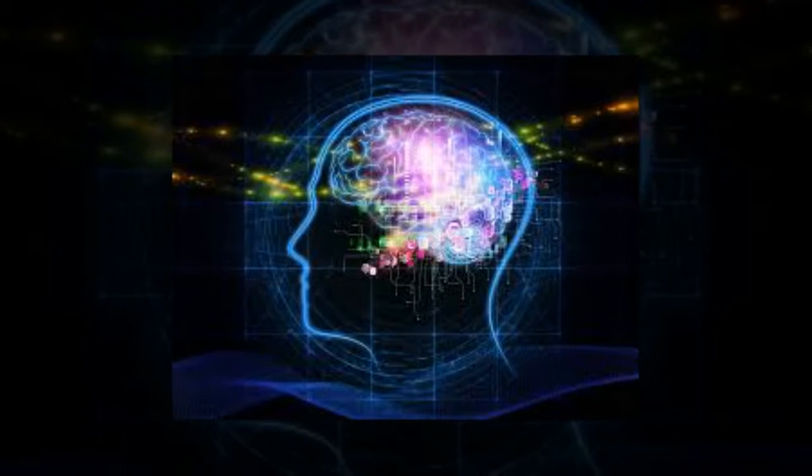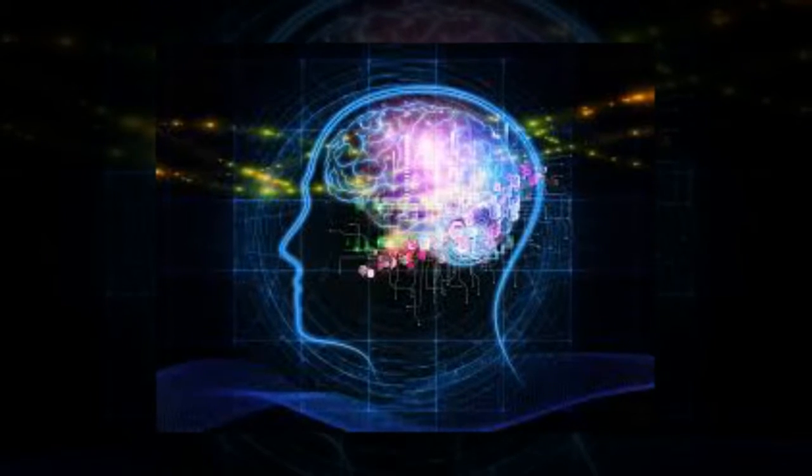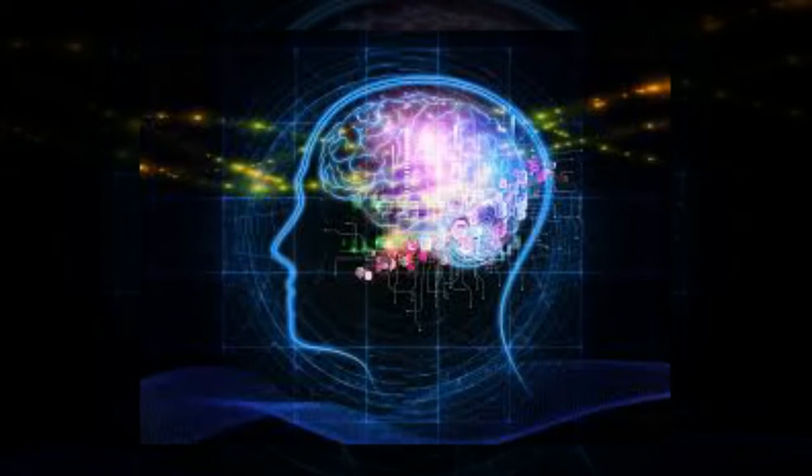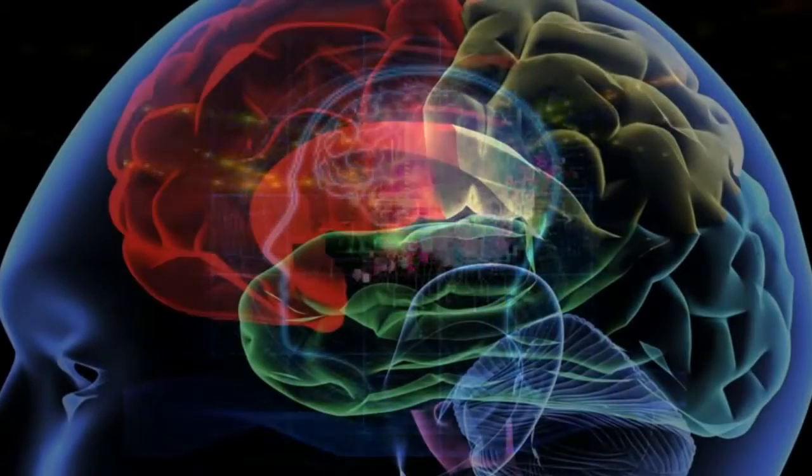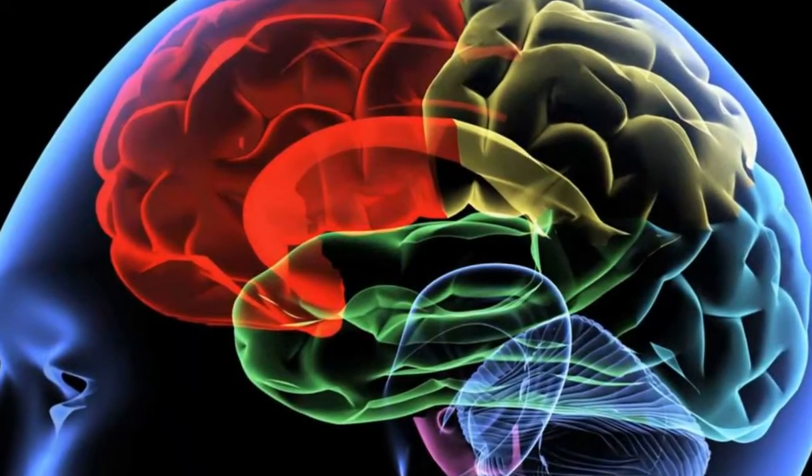Researchers discovered that, unlike a classical computer that codes information as zeros and ones, a brain cell uses 26 different ways to code its bits.